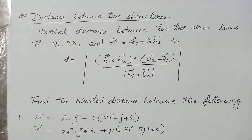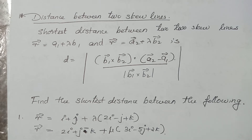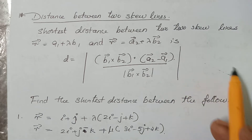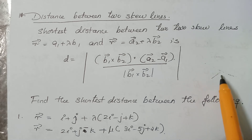This is a short question for me. This is the distance between two skew lines. How do we consider the distance between two skew lines? If we consider two lines, we consider two skew lines. These are two skew lines.